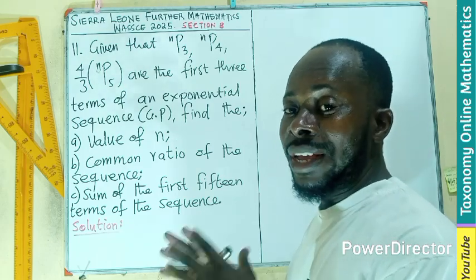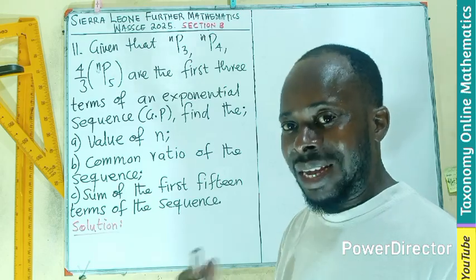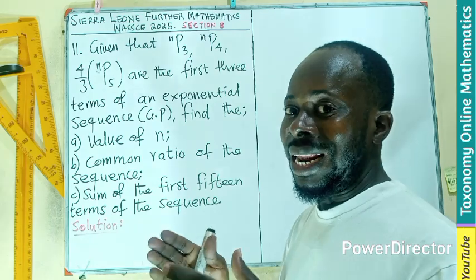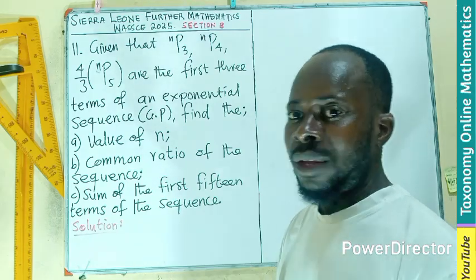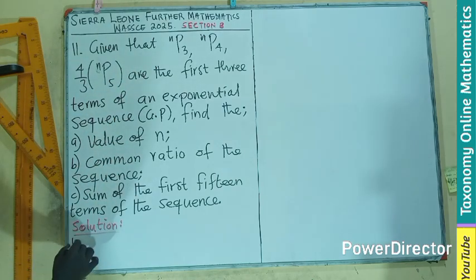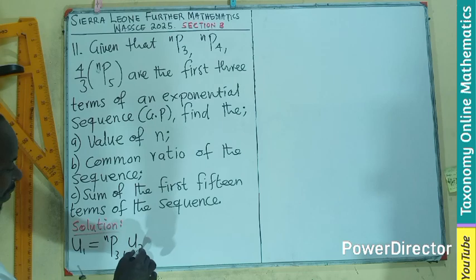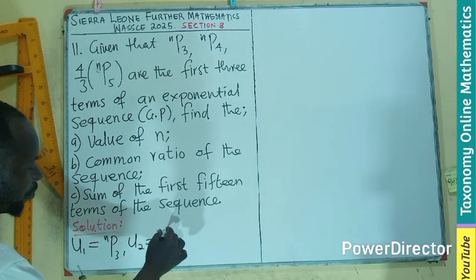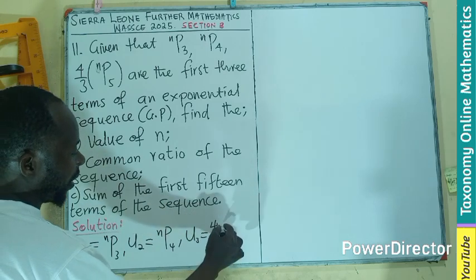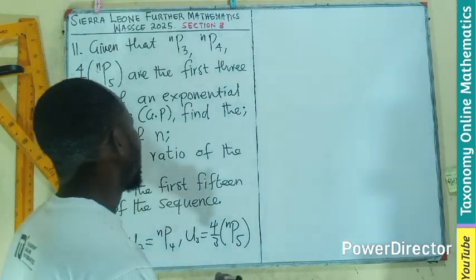There are two ways of solving it. I use one approach in solving the Nigeria version. I think I will still use that one, and the second approach I will only explain at the later part. My first term is n permutation 3, my second term is n permutation 4, and the third term is 4 on 3 multiply n permutation 5.